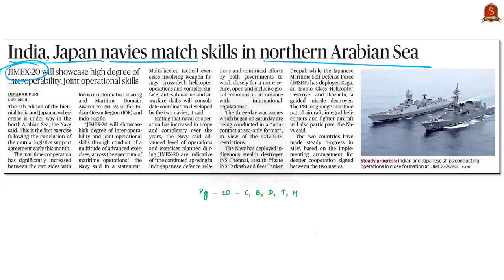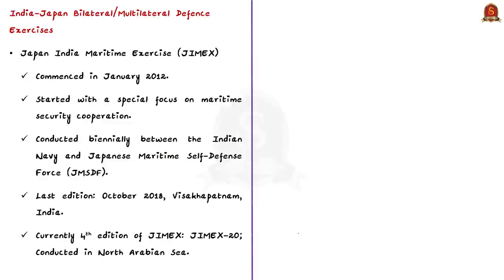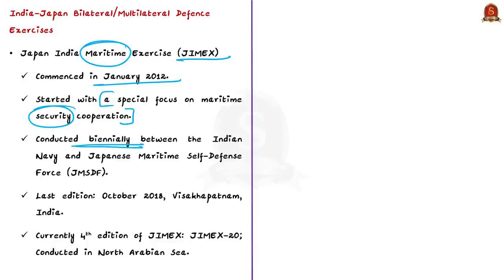Let us look at important bilateral and multilateral exercises in which India participates with Japan. JIMEX stands for Japan India Maritime Exercise — a series of exercises that commenced in January 2012, with a special focus on maritime security cooperation. It is conducted biennially between the Indian Navy and the Japanese Maritime Self-Defense Force. The last edition was conducted in October 2018 off the coast of Visakhapatnam. At present, the fourth edition, JIMEX 20, is being conducted in the North Arabian Sea.